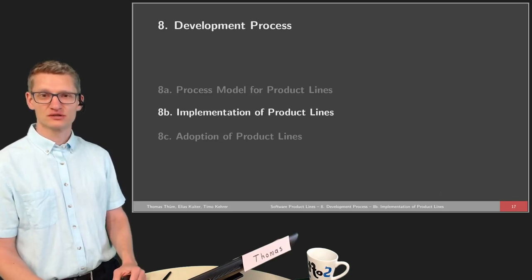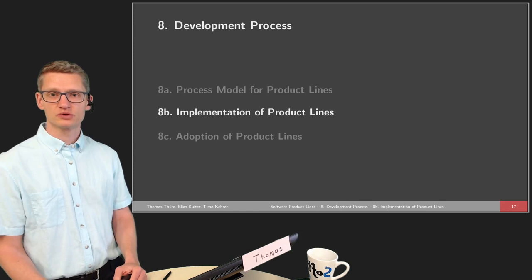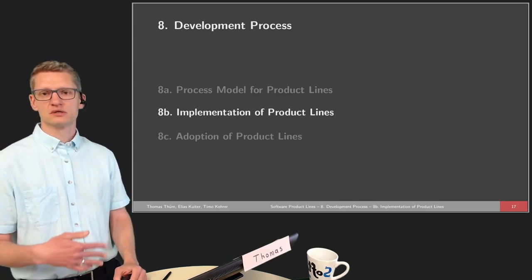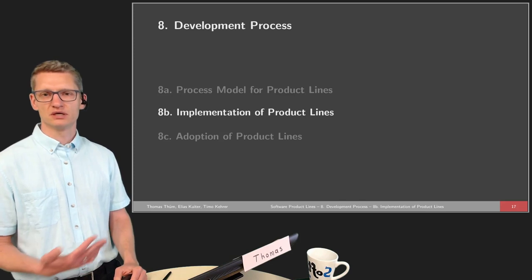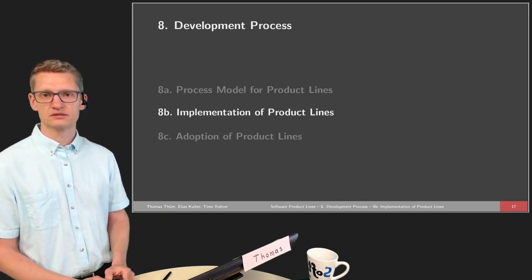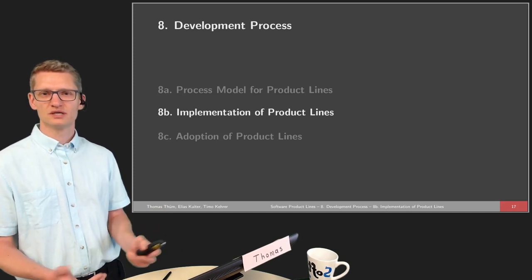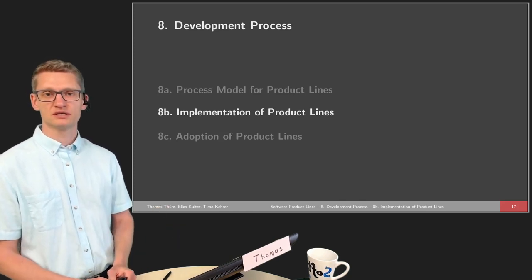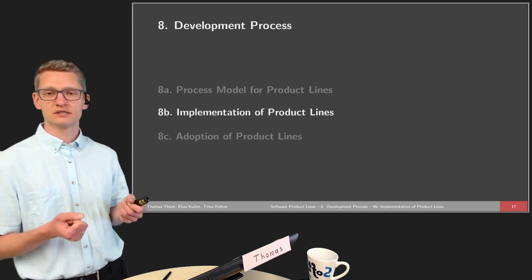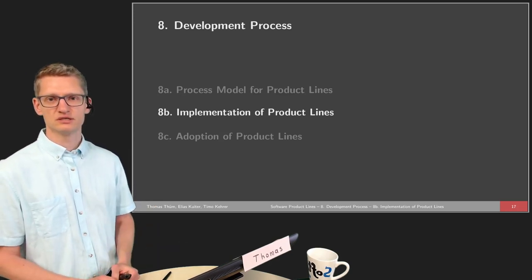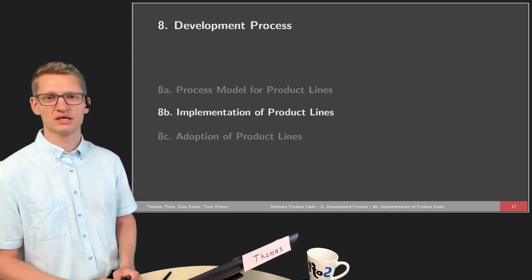Welcome to the second part of the lecture on development processes. While we talked about the more general development process of domain and application engineering in detail in the first part, we haven't yet talked about the implementation techniques in a comparative manner. We talked about implementation techniques a lot in this course, and this part is not going to be presenting new information, but rather aggregate the information so you have an overview. There are overall nine techniques, and even more depending on how you count.